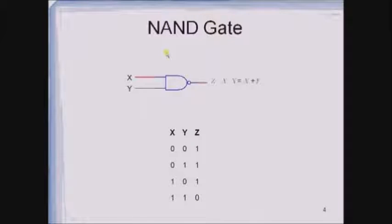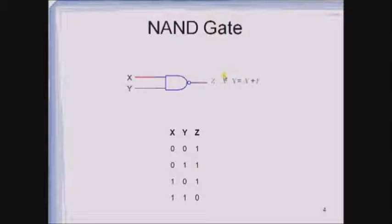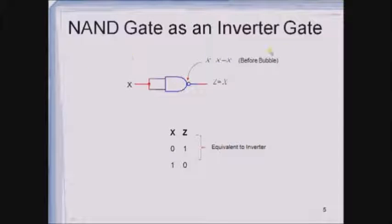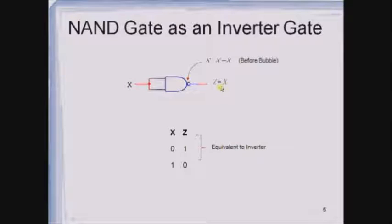Before that, let us revise the NAND gate. This is the symbol of the NAND gate. This NAND gate is receiving two inputs X and Y, and the output of this NAND gate is Z equals XY whole bar. If you apply De Morgan's theorem on this output expression, you will get X bar plus Y bar. This is the truth table of the NAND gate.